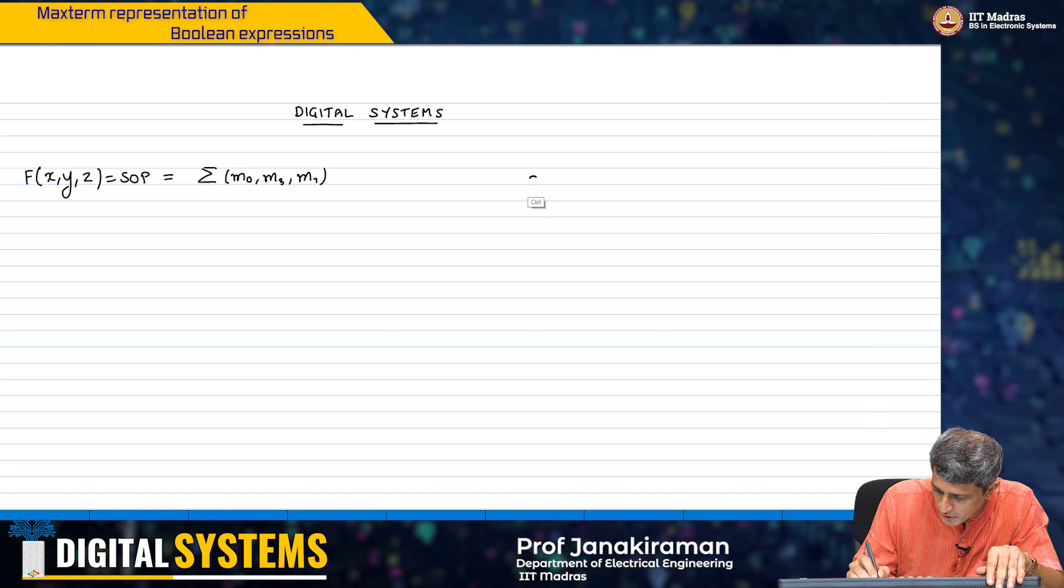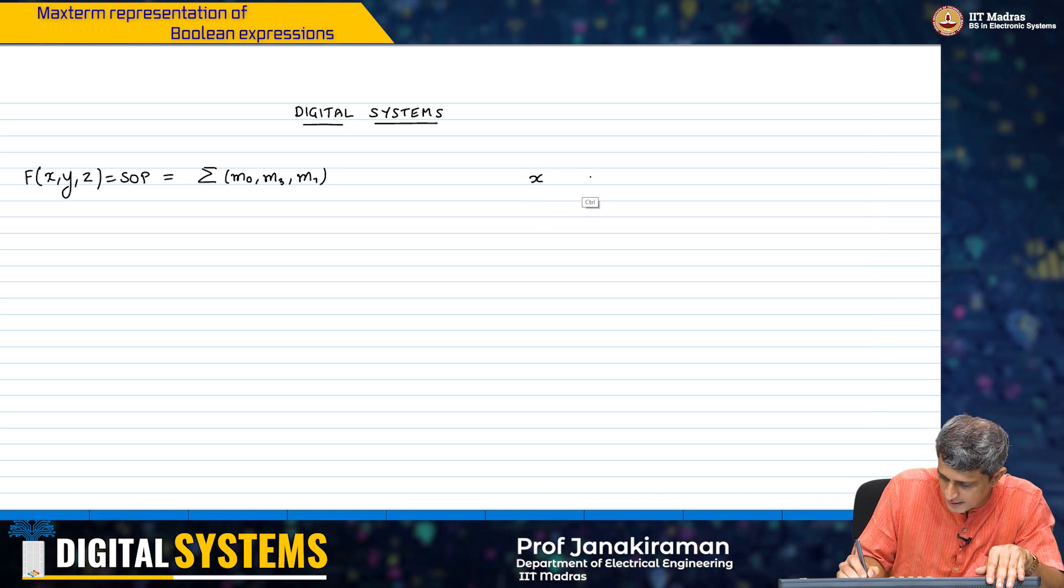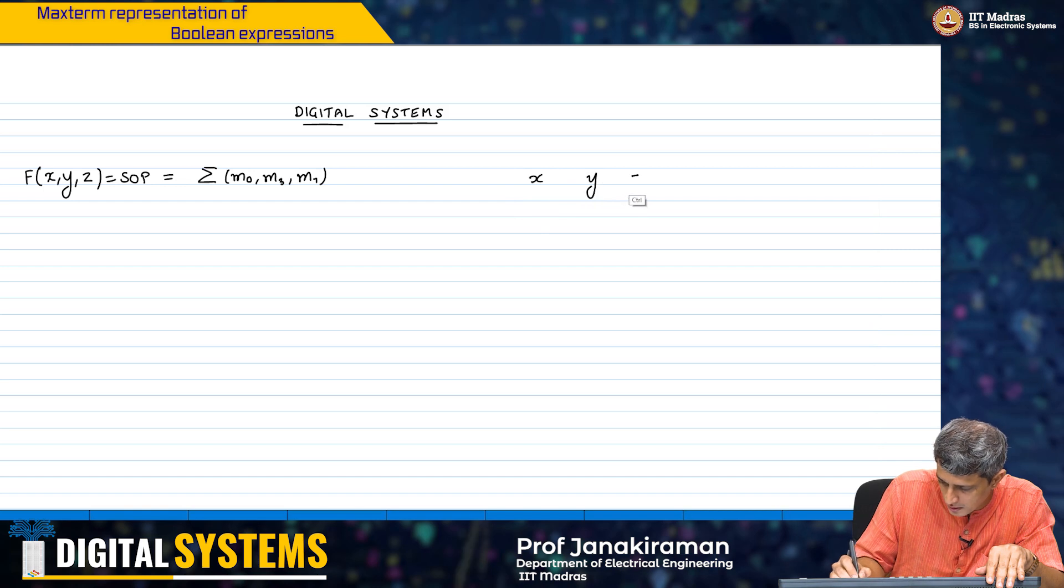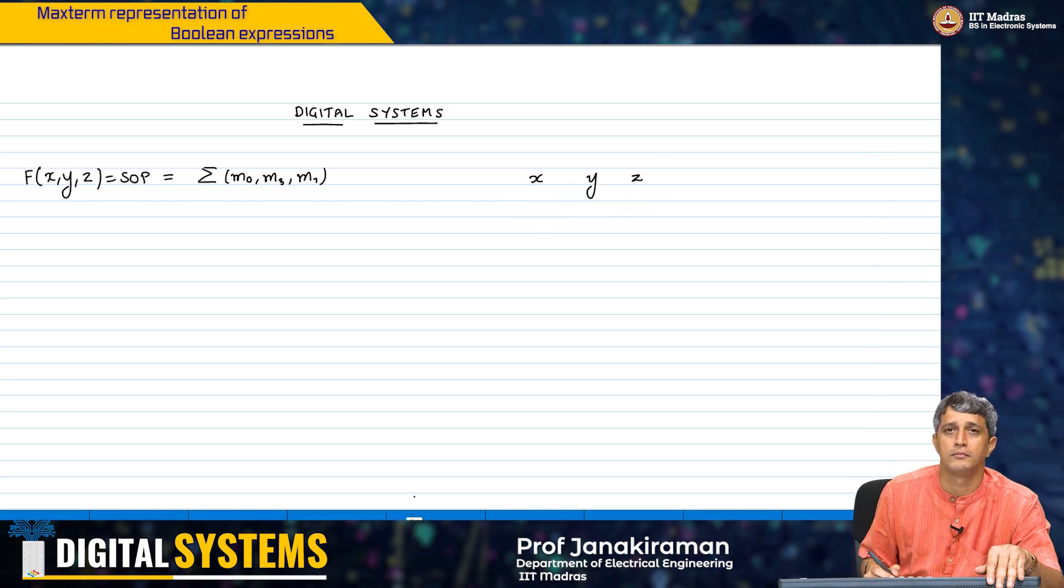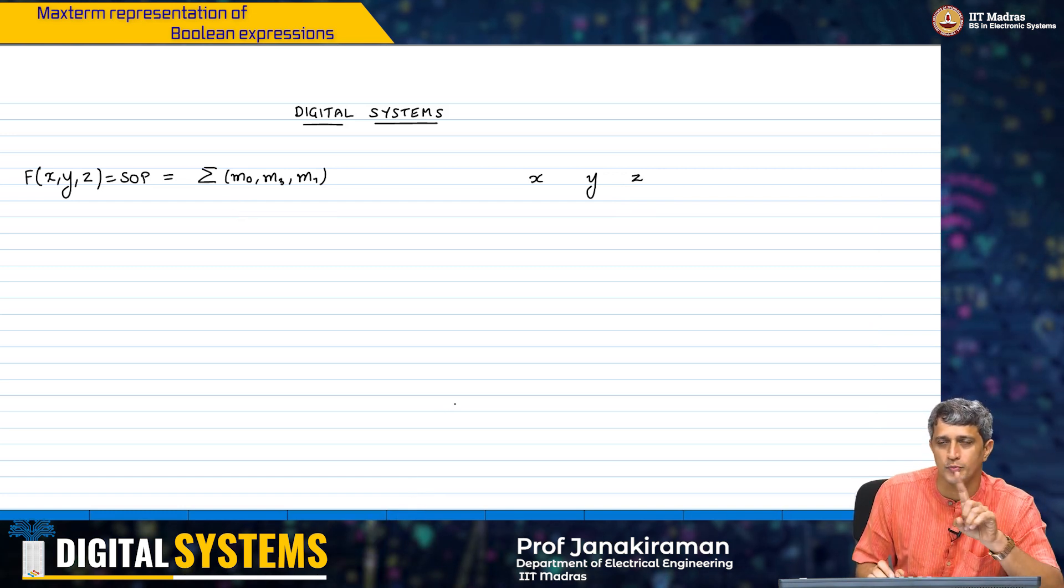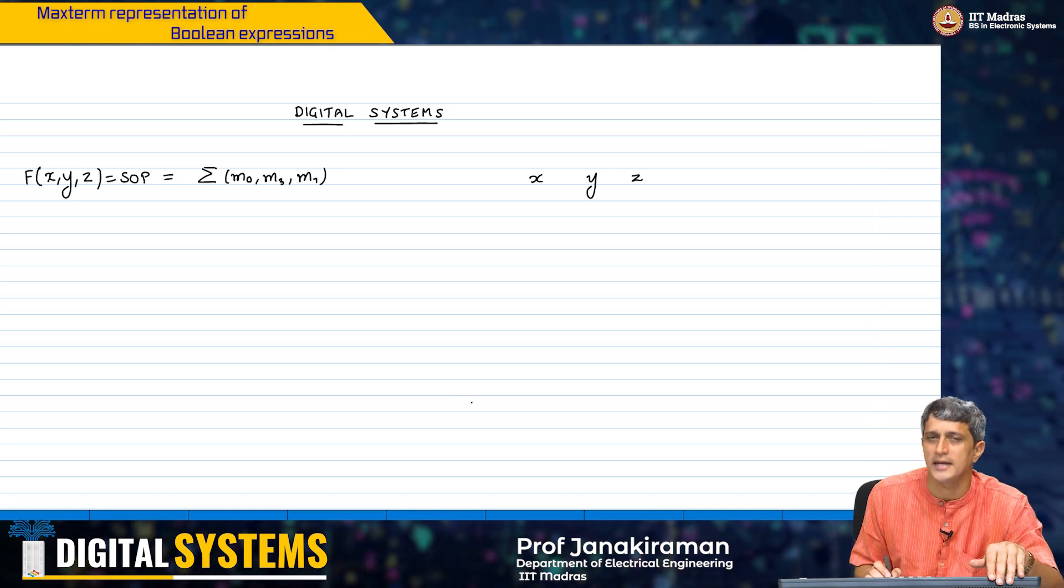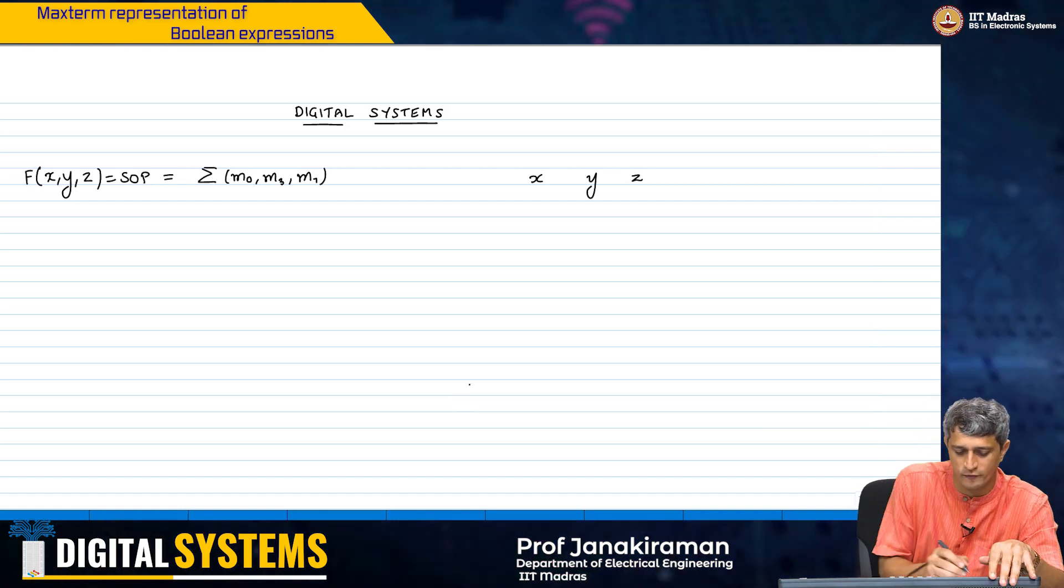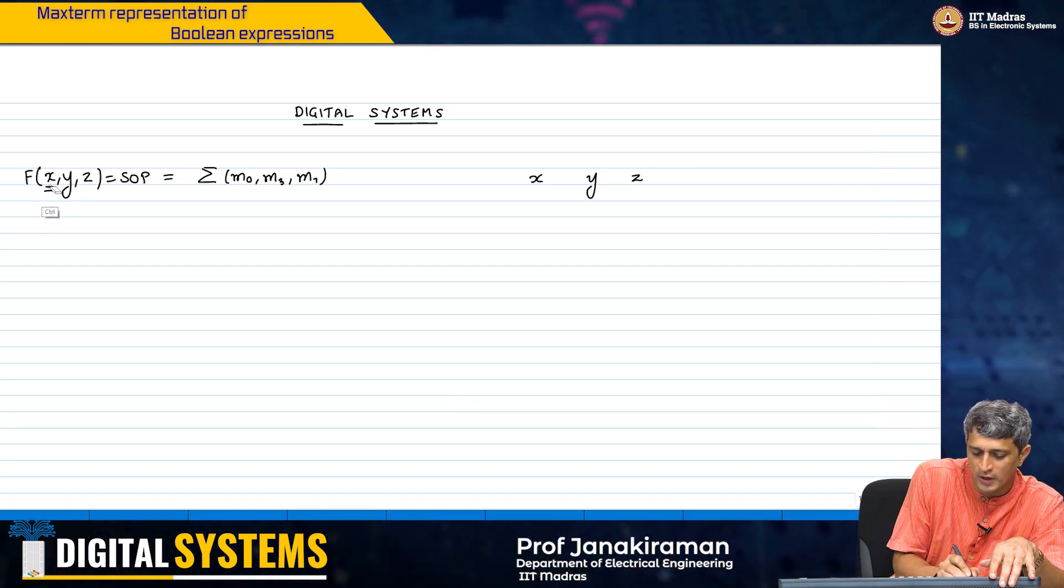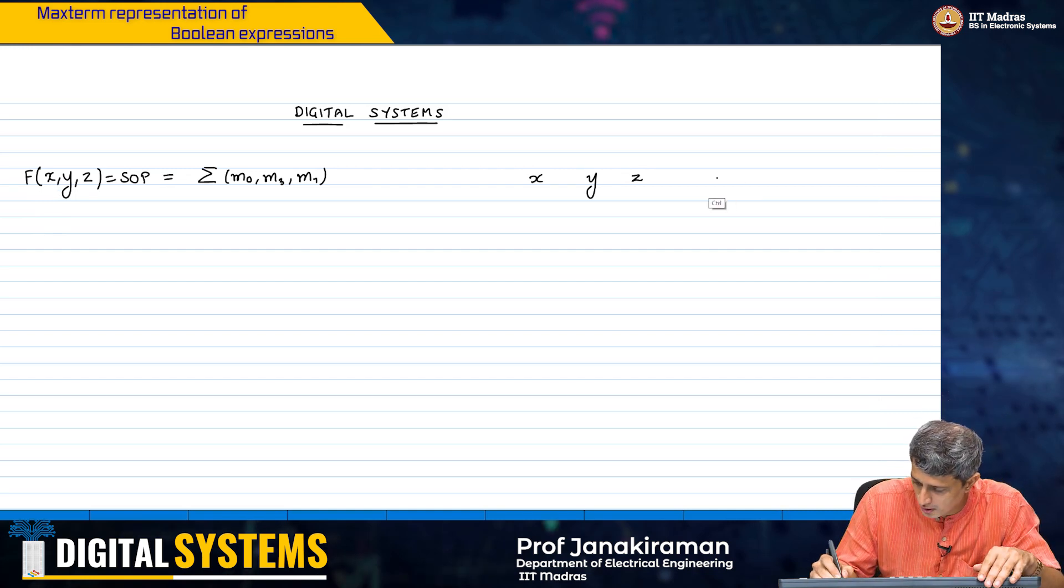This also implicitly assumes that x is the MSB of the binary number that we are representing because we have numbers 0, 3 and 7 and that needs to translate to a certain location in the truth table. And that implicitly assumes that the first variable on the left here is the MSB and the LSB is the rightmost.